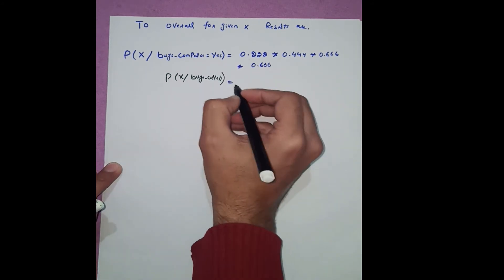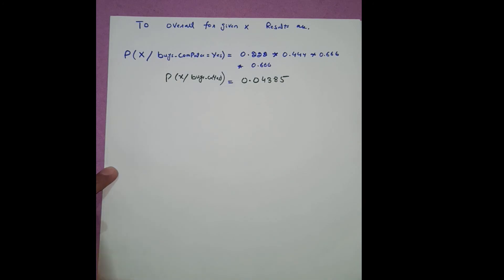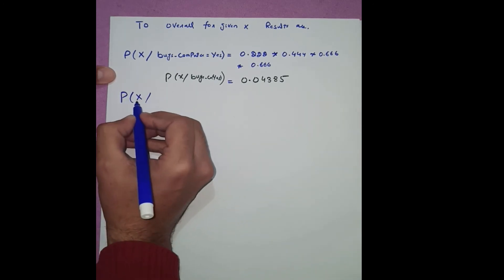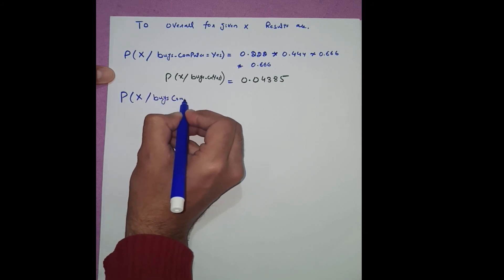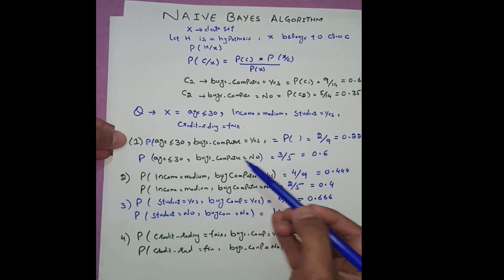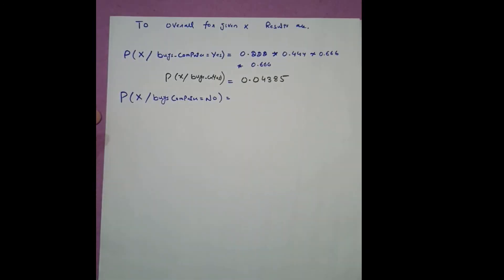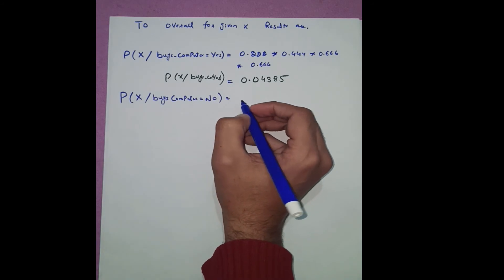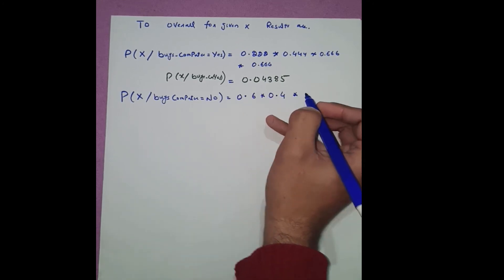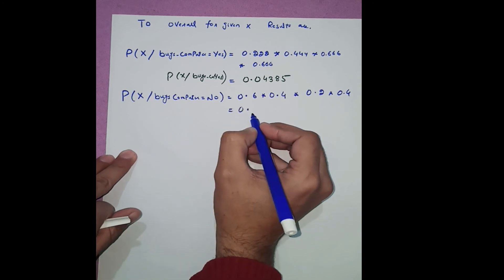Similarly, we determine the overall negative probability P(X | buys computer = no) by multiplying: 0.6 × 0.4 × 0.2 × 0.4. The answer is 0.019.